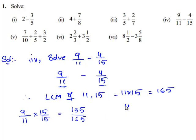Now we shall find the equivalent rational number for 4/15 by multiplying it with 11 on both the numerator and denominator. So we have 4 times 11 is 44, divided by 15 times 11 is 165.